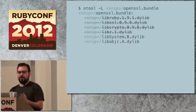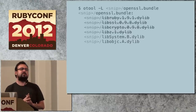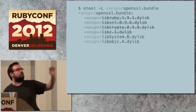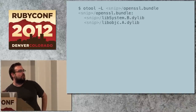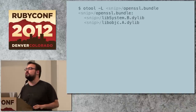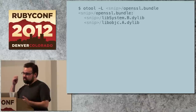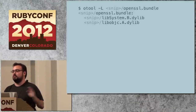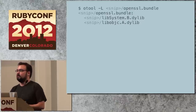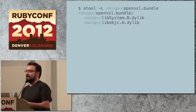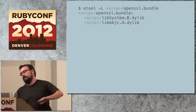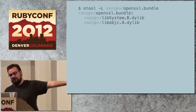Once you get this working and run otool again, those external libraries go away and now you only have libSystem and libObjc, which Apple is extremely stable about. If they made libSystem go away that would be extremely bad — it hasn't changed since OS X 10.0. And if you run the dylib print libraries on openssl again, you get only bundles that actually came with Ruby, only bundles that are part of the Ruby distribution.